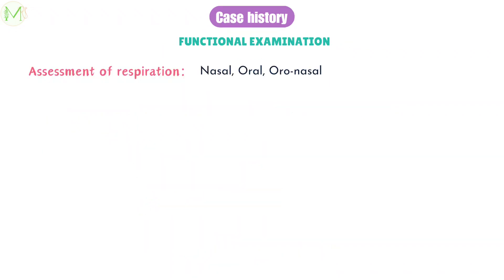Let's see how we assess respiration in a patient. Humans may exhibit three types of breathing: nasal (through the nose), oral (through the mouth), and oronasal (combined). This is an important viva question, so do note it. The simple tests used for assessing respiration are the mirror test, cotton test, water test, and observation.